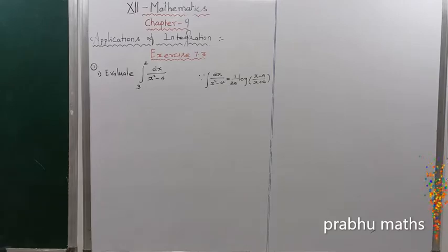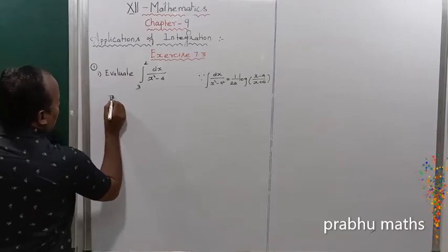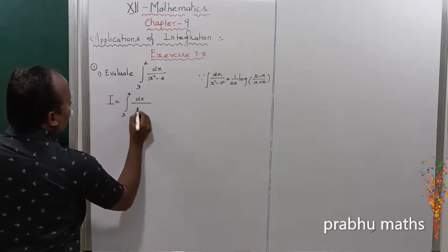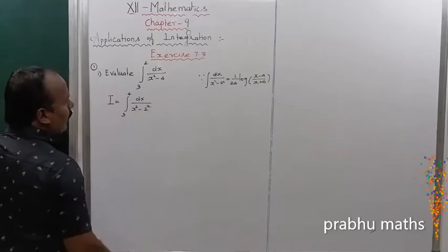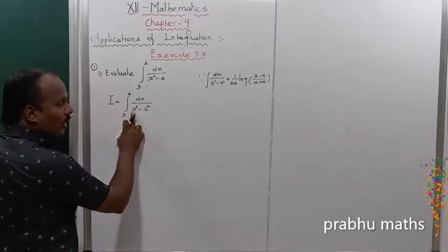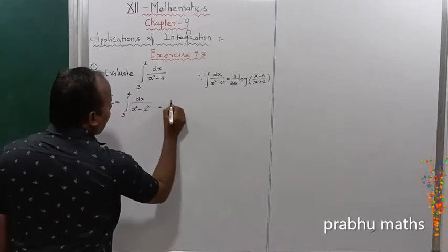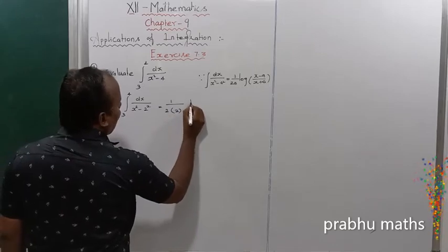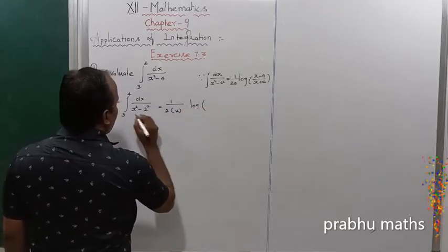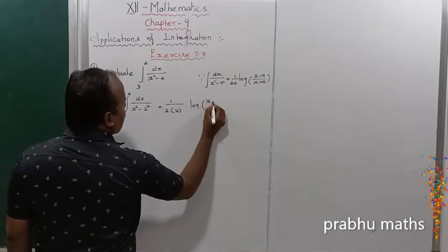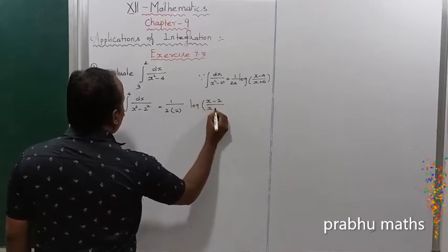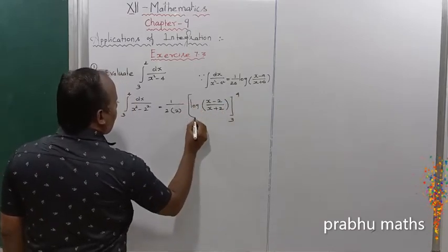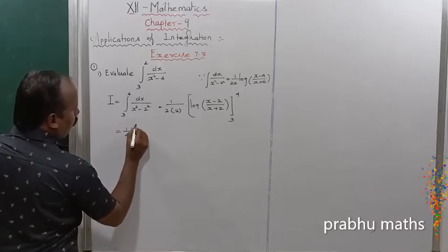Here x is equal to x and a is equal to 2. So I is equal to the integral from 3 to 4 of dx divided by x squared minus 2 squared. Now applying the formula: 1 by 2 into a value 2, so 1 by 4, into log of x minus 2 divided by x plus 2, with limits 3 to 4.